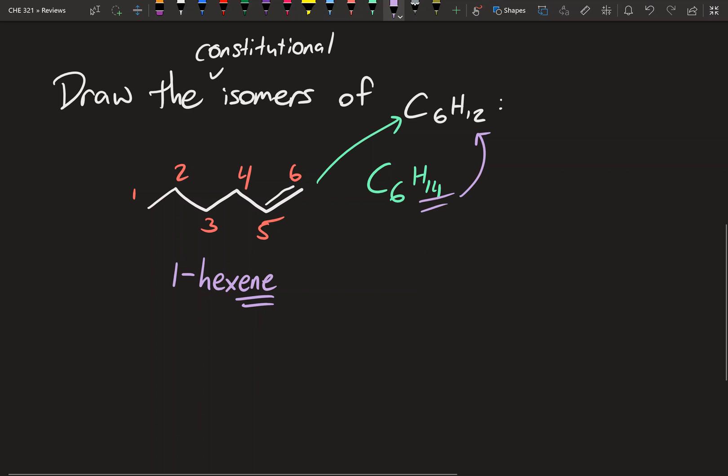ene because it's an alkene, and it's actually 1 because we want to minimize the numbering of that double bond. So we would be putting it here, 1, 2, 3, 4, 5, 6. And when naming alkenes, you have to just put the number of the double bond is going to be the lowest number you can make it. So even though it's attached to carbon 1 and 2, we only write carbon 1, so 1-hexene.